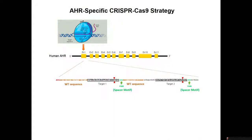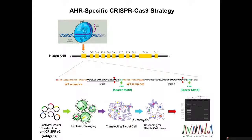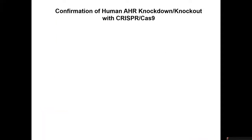Our strategy is this: we took target sequences from exon 1 of the human AHR next to PAM sequences, hoping for cuts at two sites. We put that construct into a lentivirus vector, did our transfections, selected based on puromycin, and then looked for clones with that particular section of the AHR gene deleted. We confirm everything by sequencing. I'll show you some of the quality control we've been doing once we do this gene knockout.